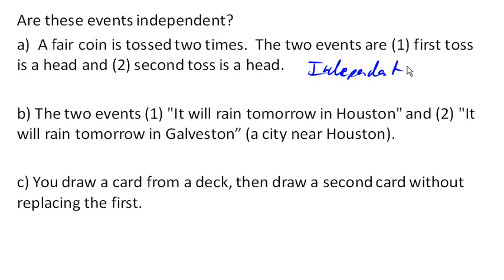How about the two events? It will rain tomorrow in Houston, and it will rain tomorrow in Galveston, which is a city near Houston. These are not independent because the cities are close together. They're likely to have similar weather patterns, and so these are not independent events.